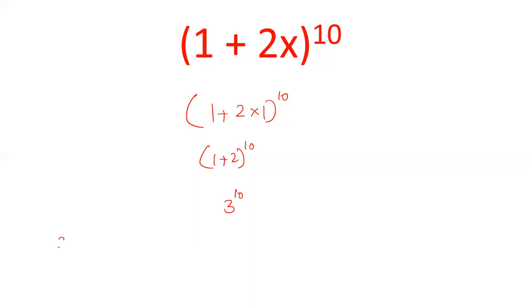Remember, friends, if we have (a + b)^n, the expansion will be a^n + C₁a^(n-1)b + C₂a^(n-2)b² until we get b^n.